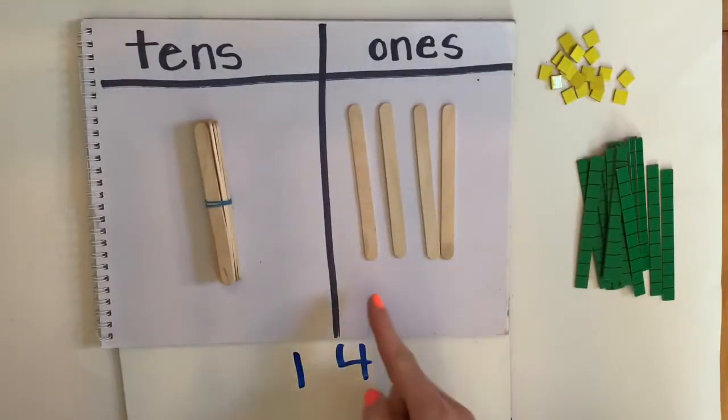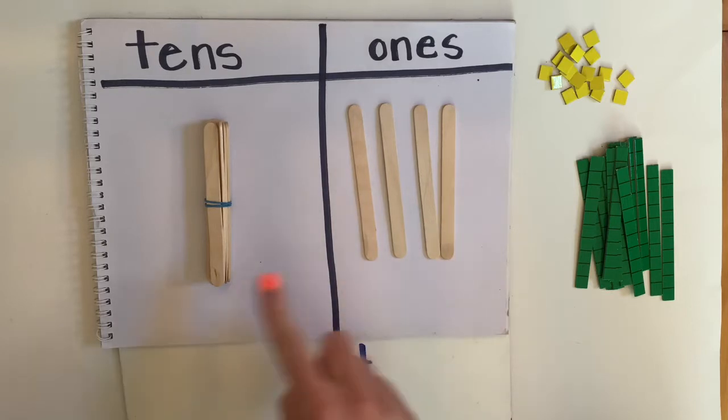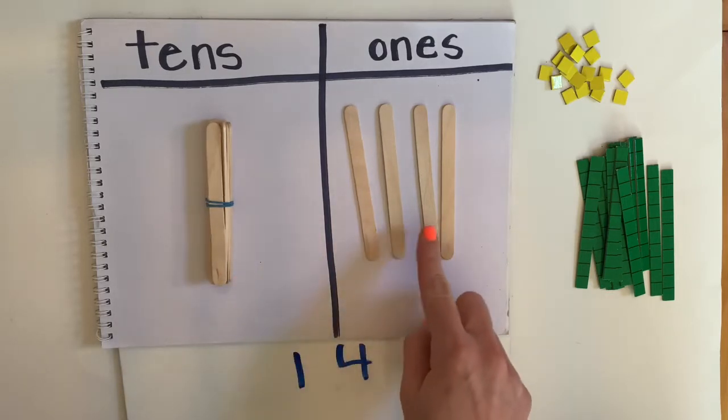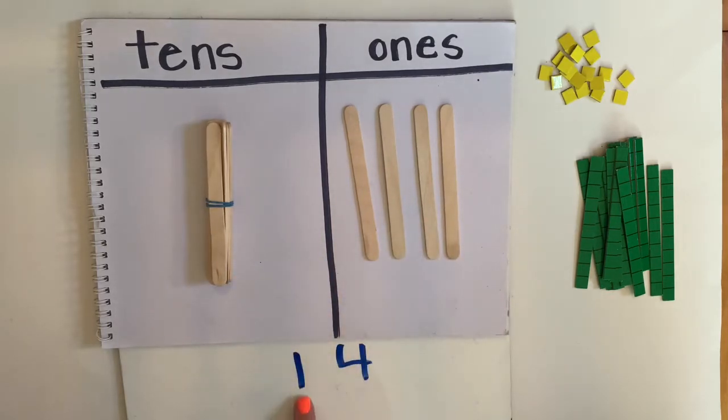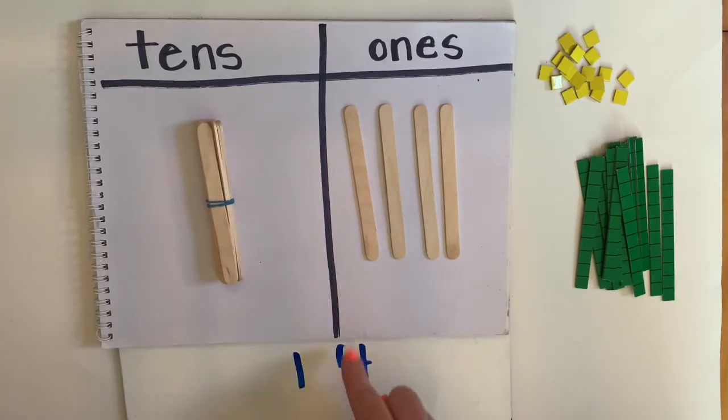So here I have the number 14. I've got one 10 bundle and 1, 2, 3, 4 ones. So that's 14 because we know 10, 11, 12, 13, 14. And we also know now that when we have the two different columns, the 10 side tells me how many 10s there are, how many 10 bundles, how many ones is in here.